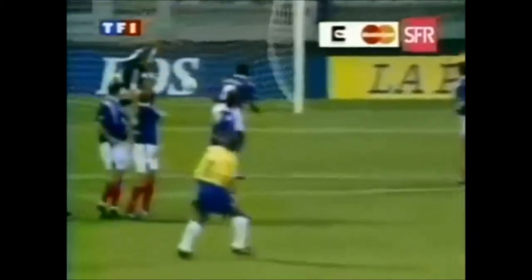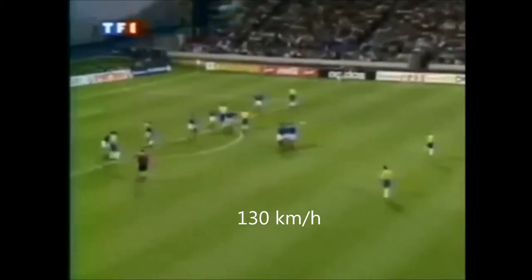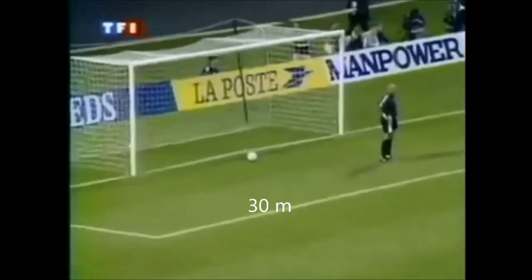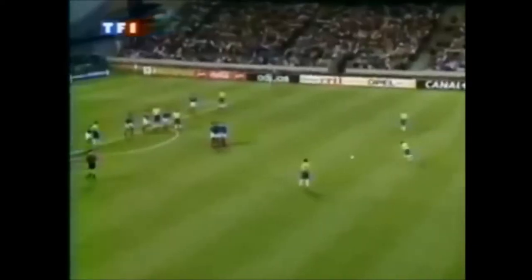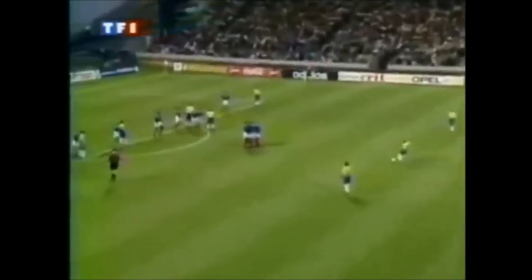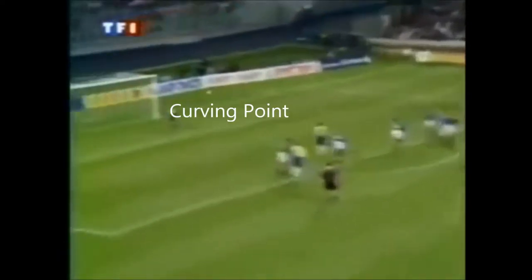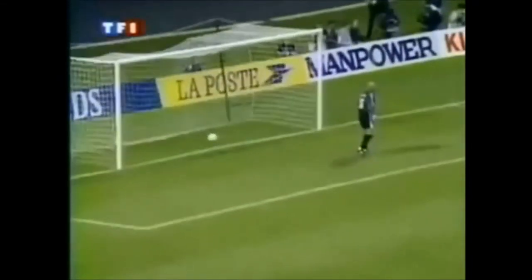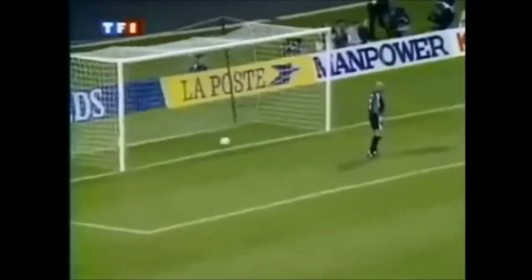Carlos's high speed of about 130 km/h and great distance of about 30 meters allowed the ball to curve right at the end of his free kick. The amount of force he exerted into his kick allowed the ball to travel so far before it started to curve. If he had put less force into his kick, the curve would have become predictable and easier for the goalie to save.